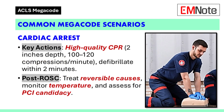Common Megacode scenario — Cardiac arrest: Perform high-quality CPR with a compression depth of 2 inches and a rate of 100 to 120 compressions per minute. Defibrillate within 2 minutes for shockable rhythms. After return of spontaneous circulation, treat reversible causes, monitor temperature, and assess the patient for percutaneous coronary intervention candidacy.